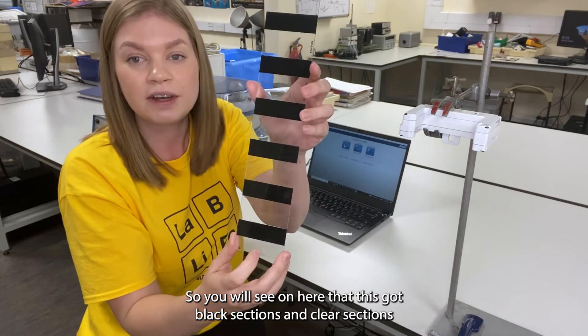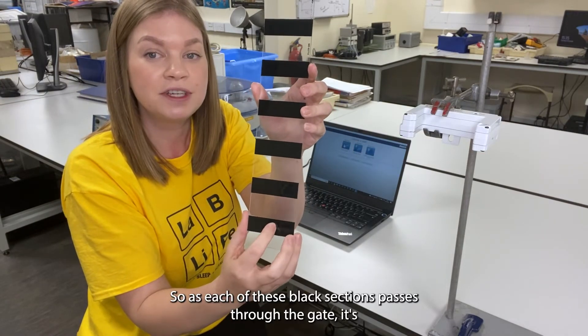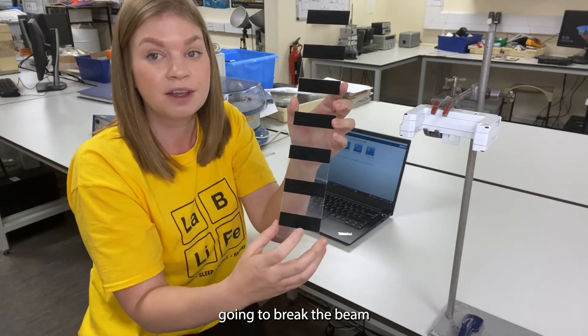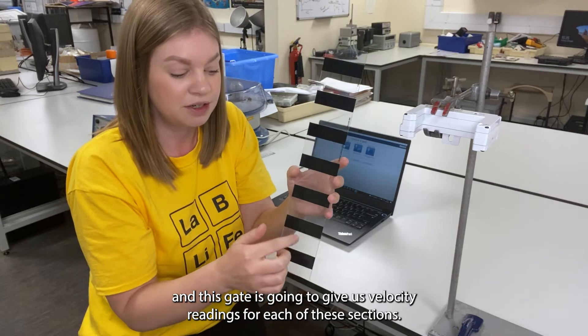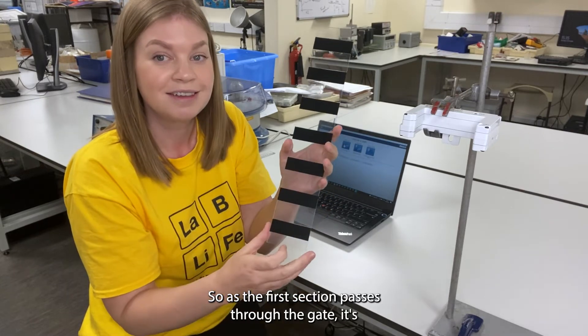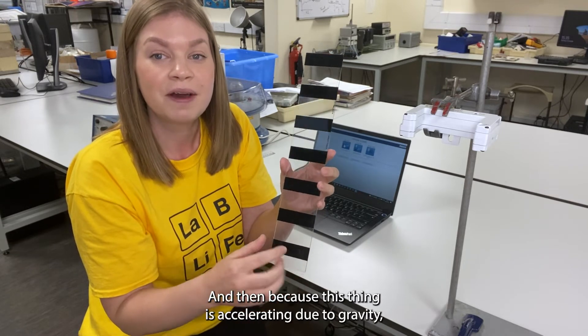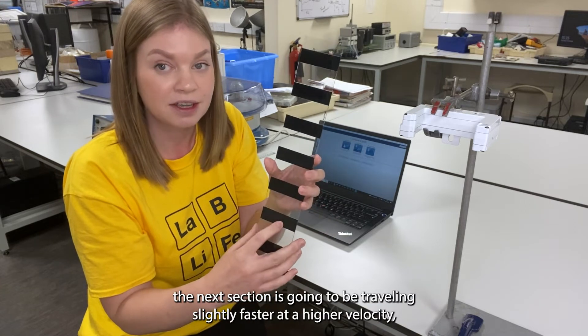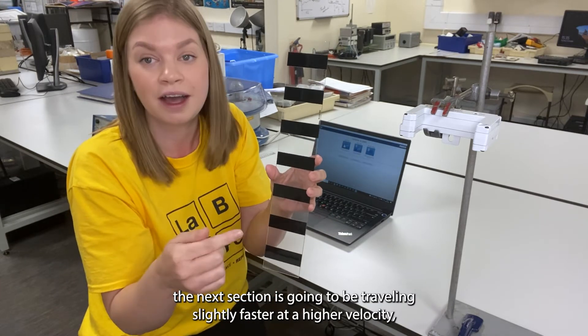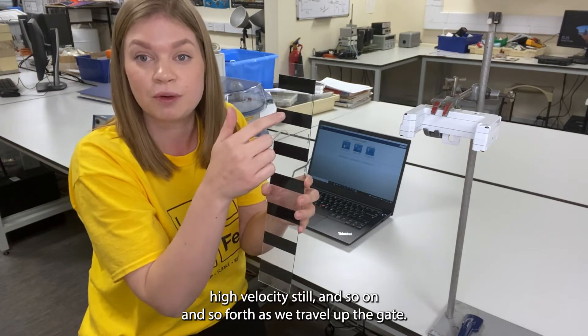The point of the experiment is that I'm going to be dropping this picket fence through the gate. So you will see on here that this has got black sections and clear sections. So as each of these black sections passes through the gate it's going to break the beam and this gate is going to give us velocity readings for each of these sections.